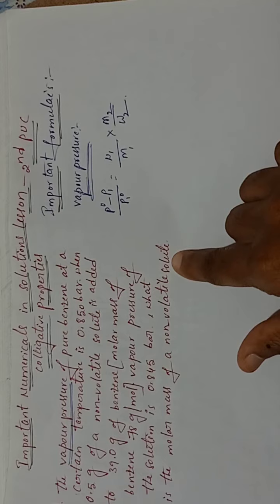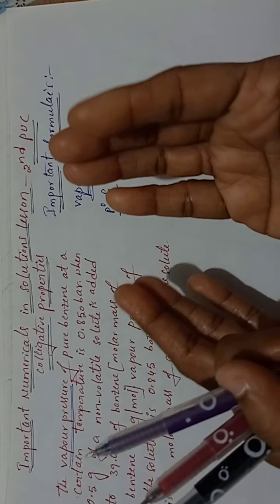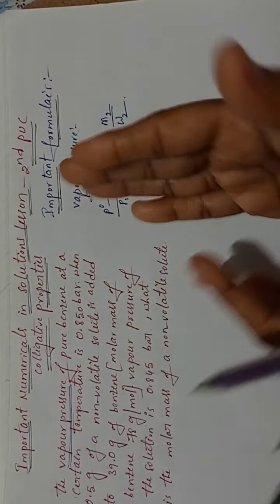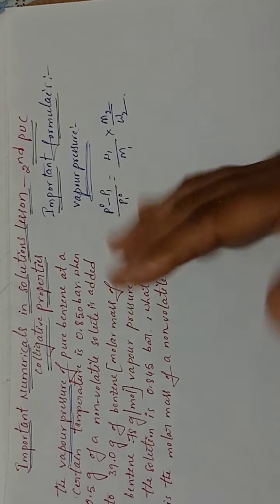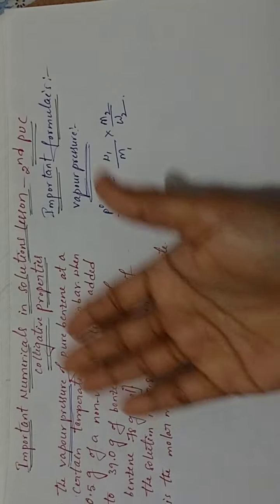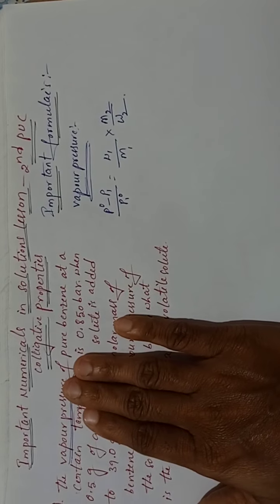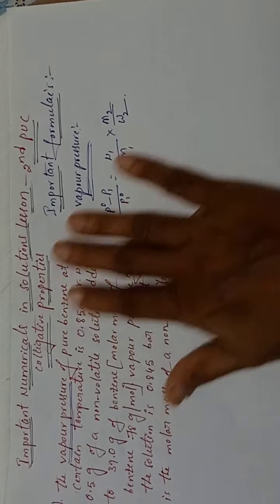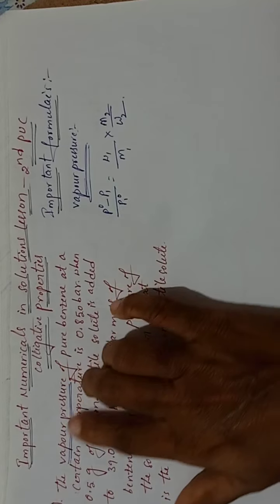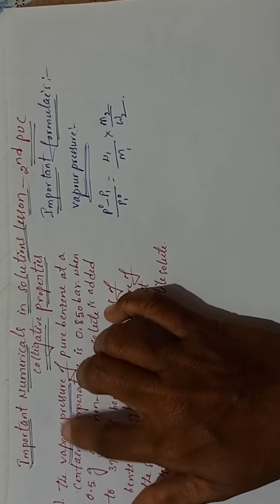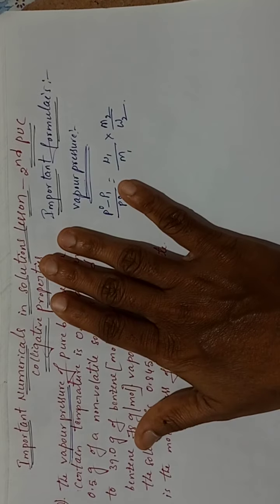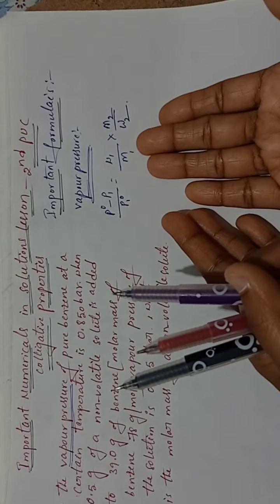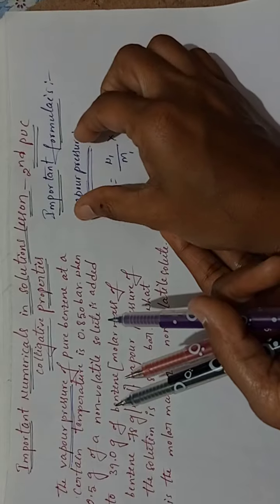We need to find the molar mass of the non-volatile solute. We know that colligative properties are mainly used to calculate the molar mass of a non-volatile solute. This is the first colligative property. If a vapor pressure word appears in the problem, you immediately use this formula: p1⁰ minus p1 by p1⁰ equals w1 by m1 into m2 by w2.